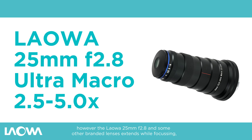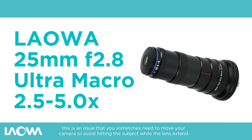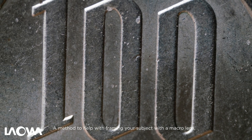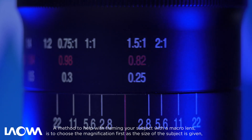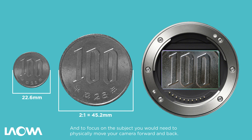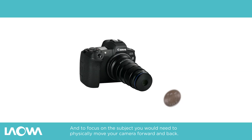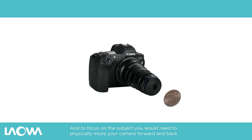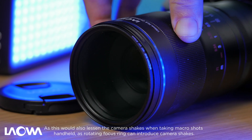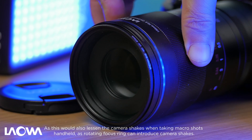The Laowa 25 millimeter f/2.8 and some other branded lenses extend while focusing, which can be an issue — you sometimes need to move your camera to avoid hitting the subject as the lens extends. A helpful method for framing with a macro lens is to choose the magnification first. Since the subject size is given, decide how much of the sensor you want it to cover, then move your camera physically forward and back to focus. This also reduces camera shake when shooting handheld, as rotating the focus ring can introduce shake.